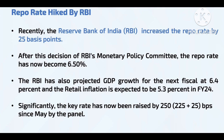The RBI has increased the repo rate by 25 basis points and it has now become 6.50%. The Monetary Policy Committee decides how much to adjust it according to market conditions and inflation. The RBI has also told us that our next fiscal year GDP will grow 6.4% and our retail inflation will slow down to 5.3%.